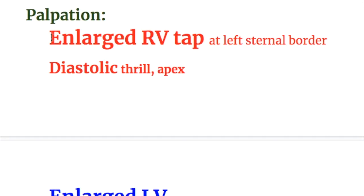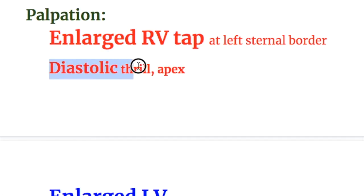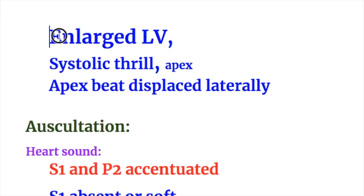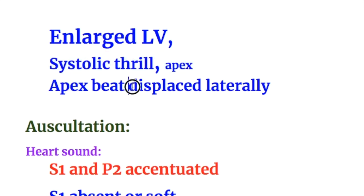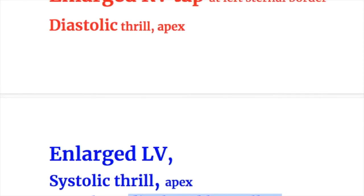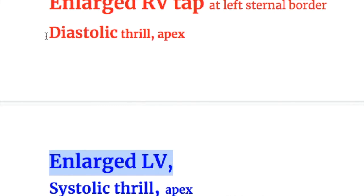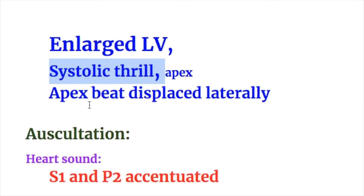Palpatory findings: In mitral stenosis, there is an enlarged right ventricular tap at the left sternal border and a diastolic thrill at the apex. Whereas in mitral regurgitation, there is an enlarged left ventricle, a systolic thrill at the apex, and the apex beat is displaced laterally and downwards. So the key difference in palpation is: mitral stenosis has an enlarged RV tap and diastolic thrill, while mitral regurgitation has an enlarged left ventricle and systolic thrill, with the apex beat displaced laterally and downwards.